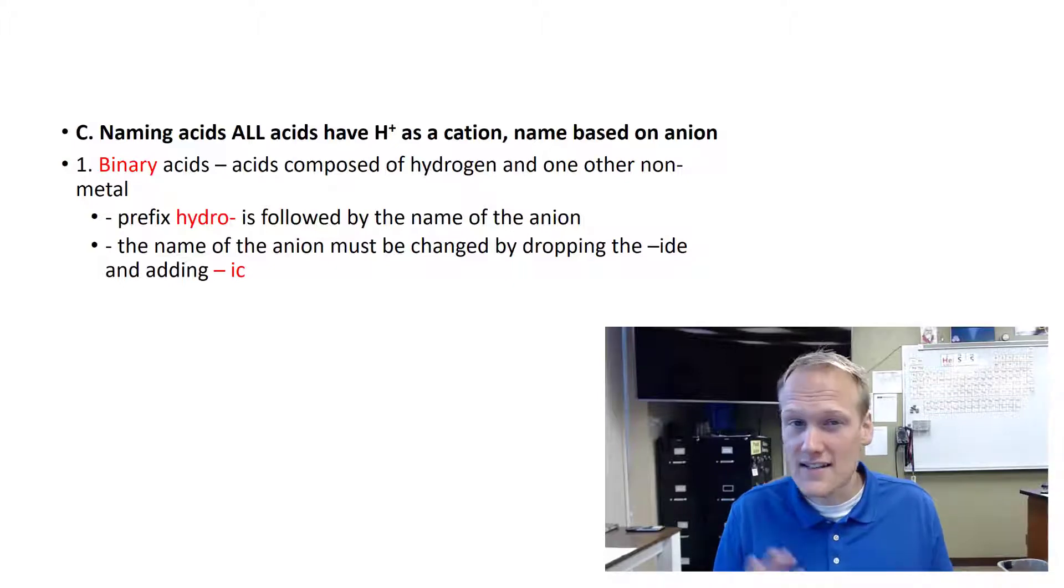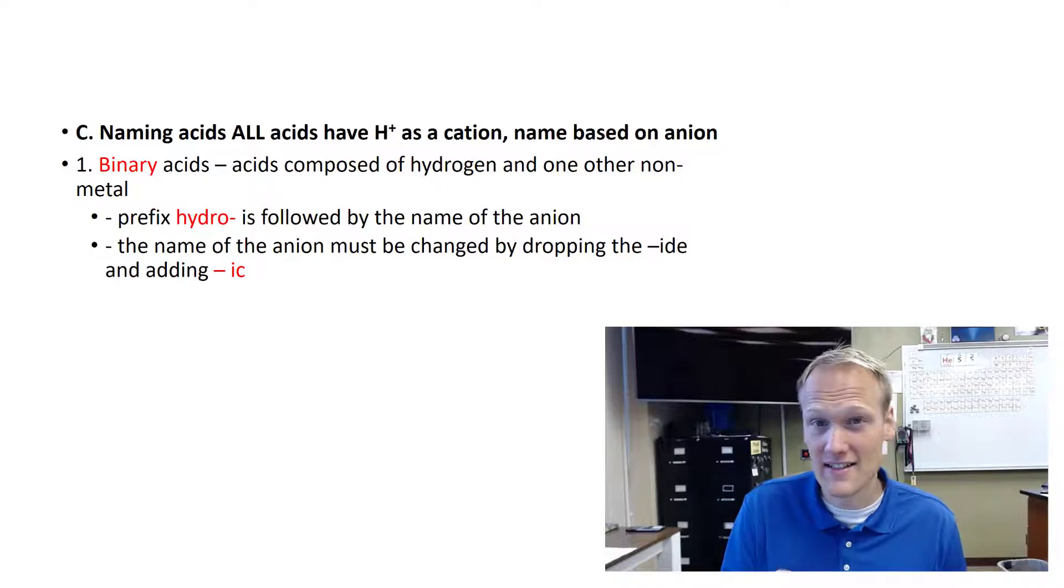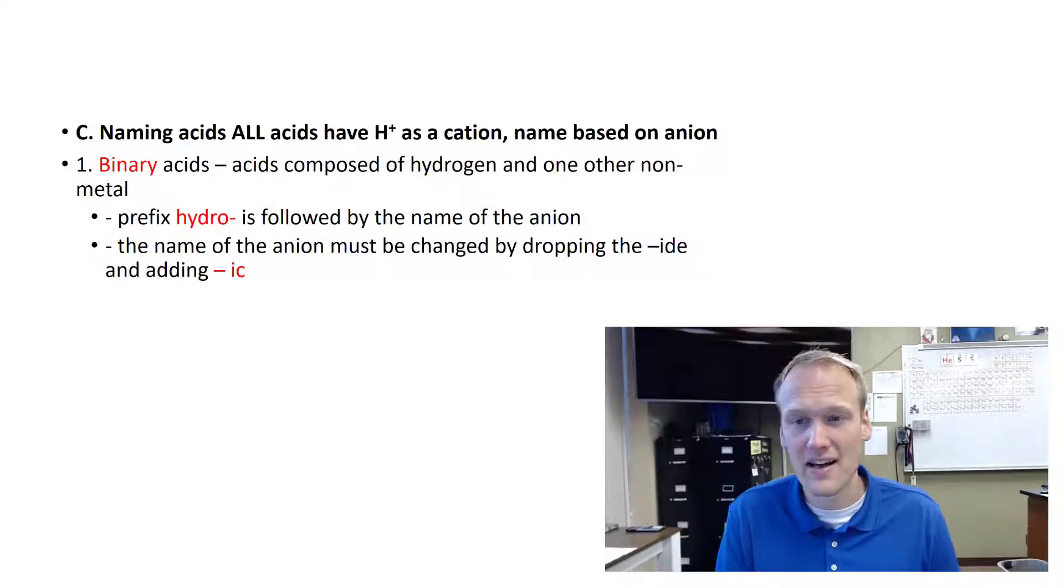Acids, oxy acids and binary, will always have hydrogen H+ as the cation. And so with a binary acid, it's going to be the H+ ion with some other anion, which is going to be a non-metal.